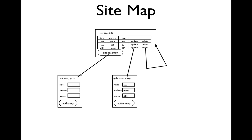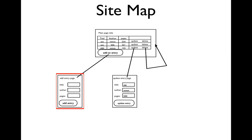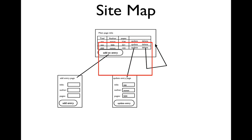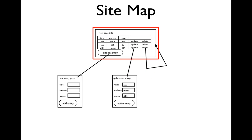Let's think about what the viewer will see. We have displayed a site map. The first page is the table with the data from the database. If they click on Add Entry, they get an Add Entry page. When they fill that out and click Add Entry, they go back to the Browse table. If they click on Update, they go to an Update Entry page, make adjustments, click Update Entry, and return to the table view.